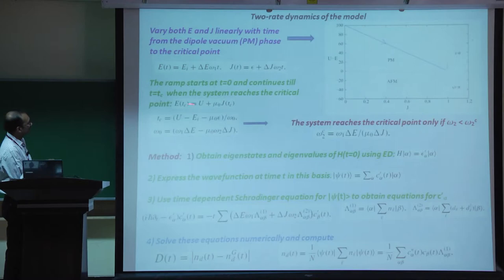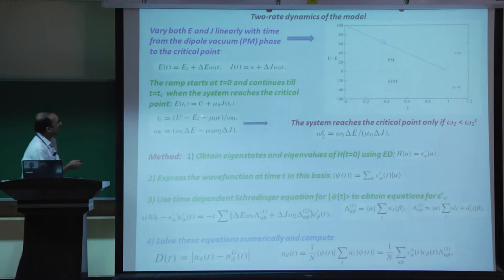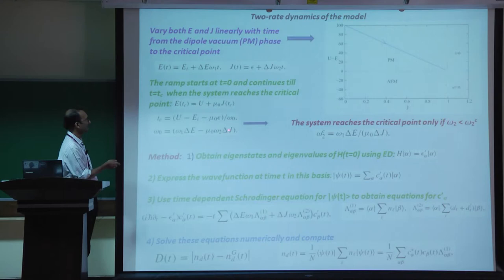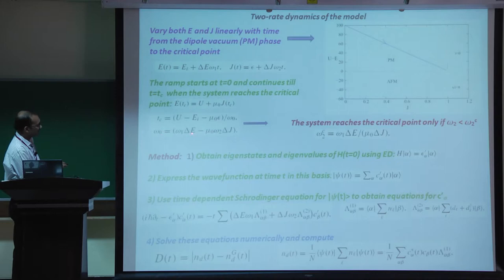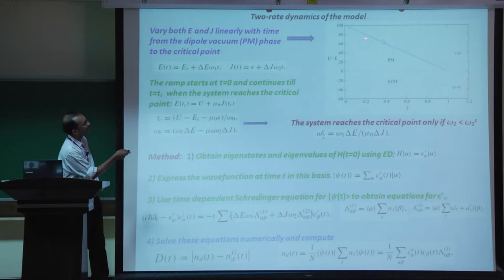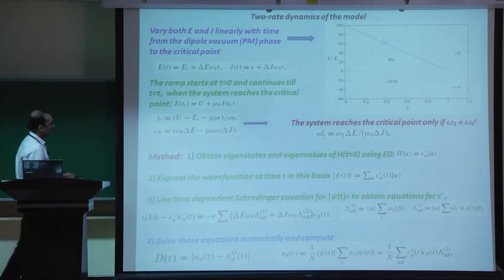The ramp starts at t=0 and continues until we reach the critical point, moving through e-J parameter space. It takes a time t_c for the system to reach the critical point. For t_c > 0, omega_0 must be greater than zero, which means there is a critical ratio of omega_2/omega_1 above which the system does not reach the critical point - if driven too fast, the trajectory runs nearly parallel to the critical line.